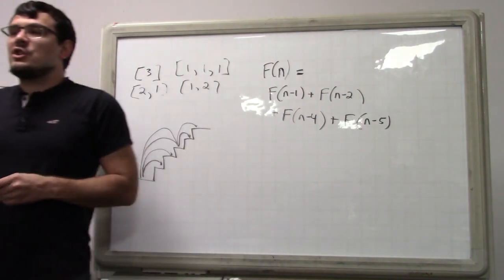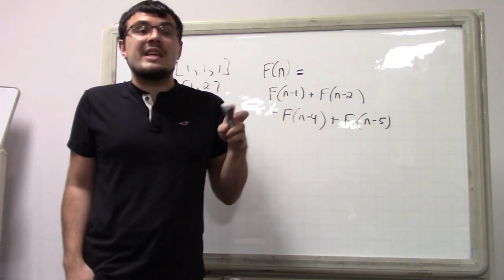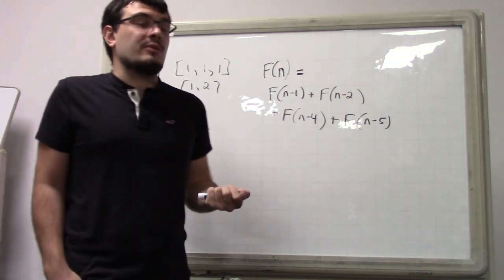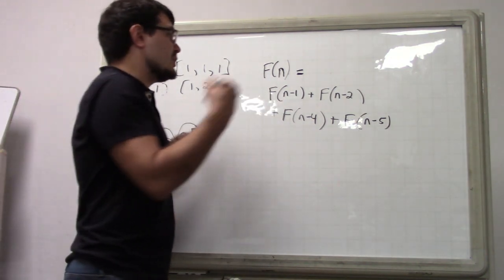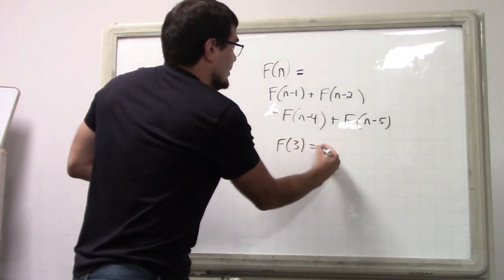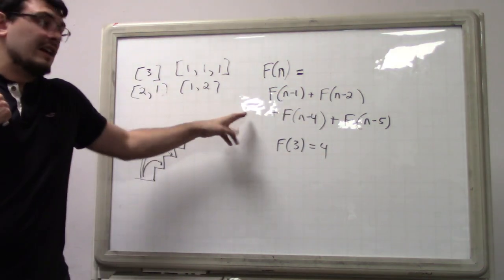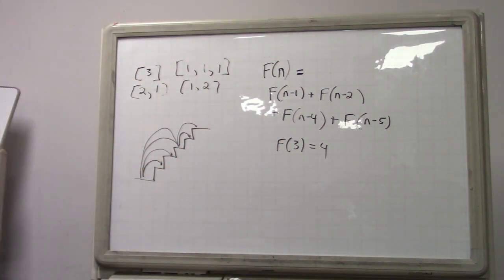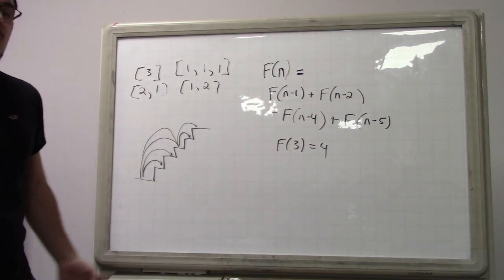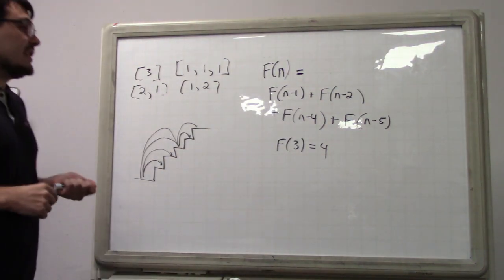This formula works, though you need to adjust the base cases slightly. This formula never covers the possibility of taking 3 steps just by itself, because normally if you take 3 steps we view it as 3 then 1. But this gives the wrong answer for n equals 3, so you have to add an explicit case: F(3) = 4. This is the only case it's wrong for, because the formula has no n minus 3 term.